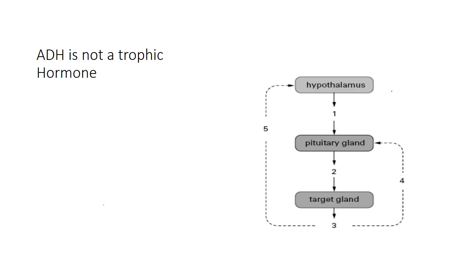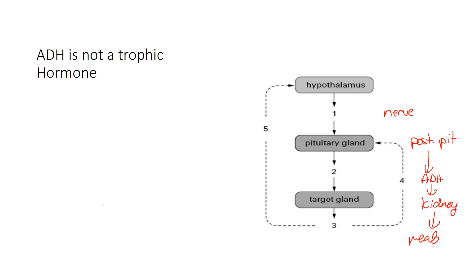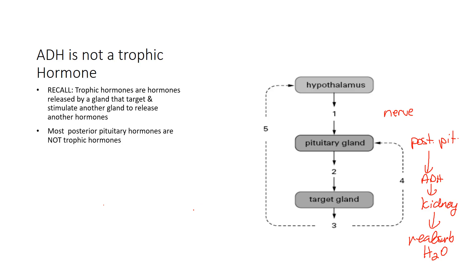The hypothalamus releases a nerve impulse to the posterior pituitary, which releases ADH. ADH targets the kidney, but the kidney is not releasing another hormone — all the kidney is doing is reabsorbing more water back into the bloodstream. So this is not a tropic hormone because the kidney is not releasing a hormone. Most posterior pituitary hormones are not tropic hormones.